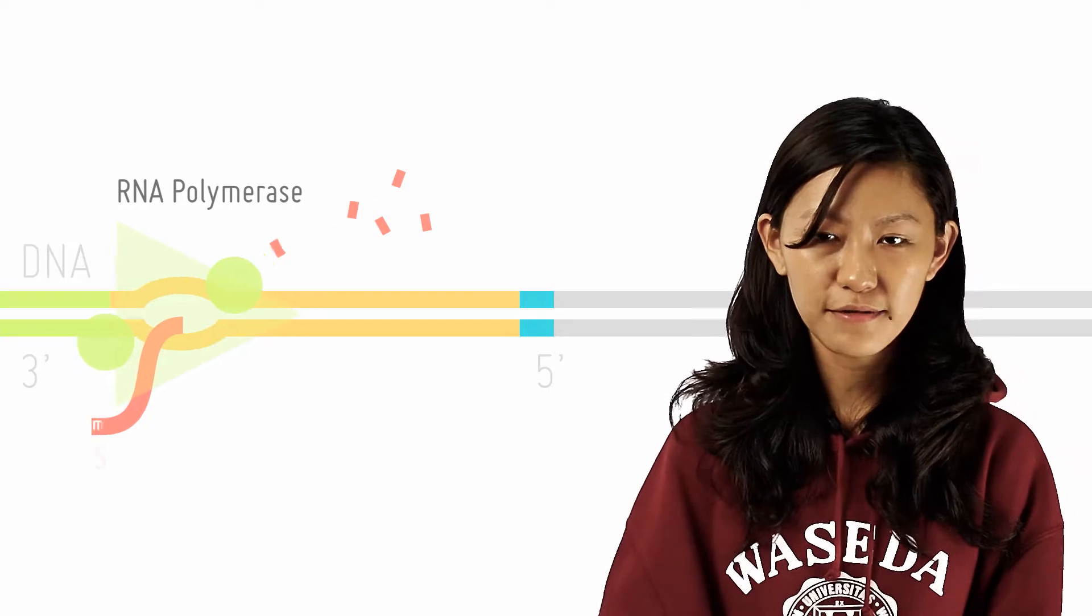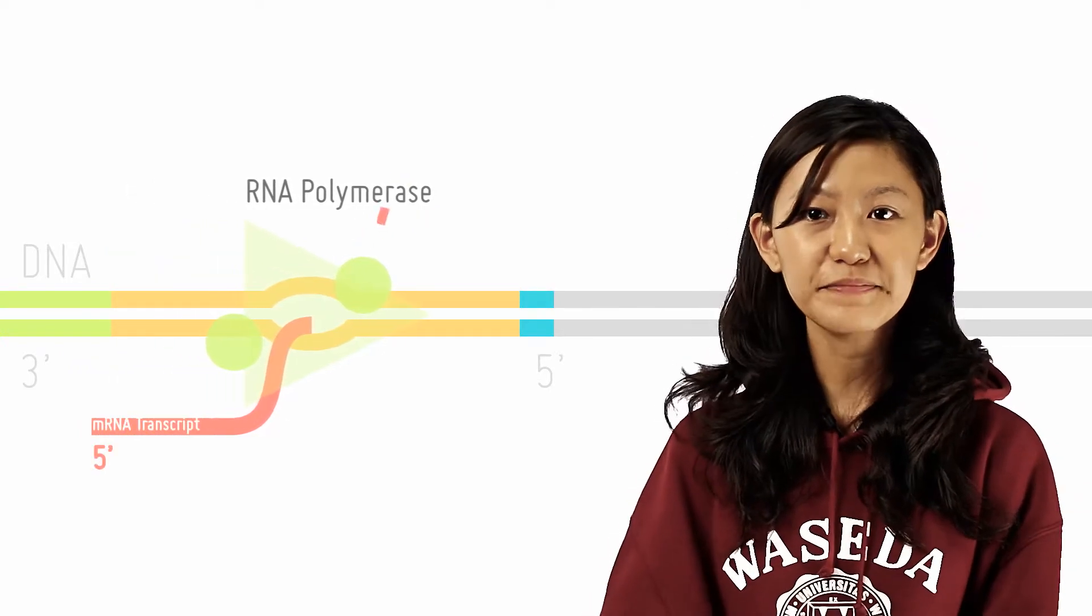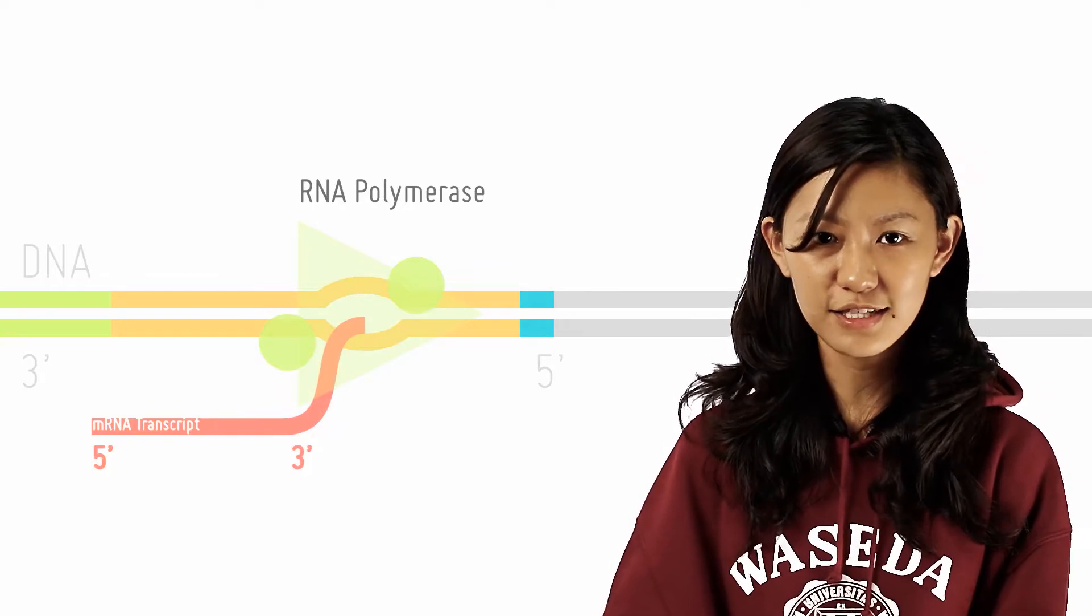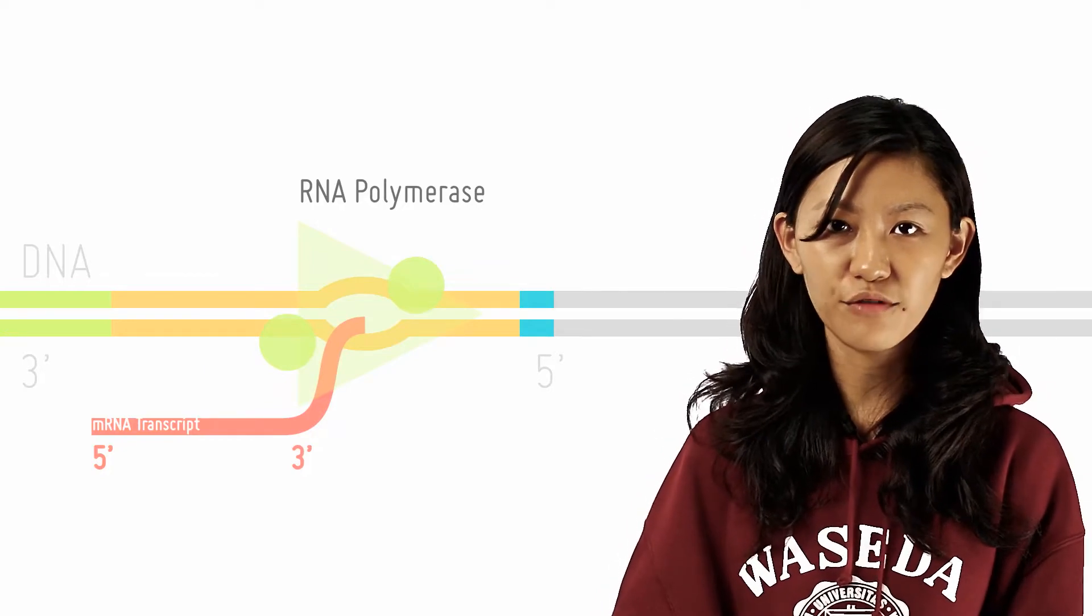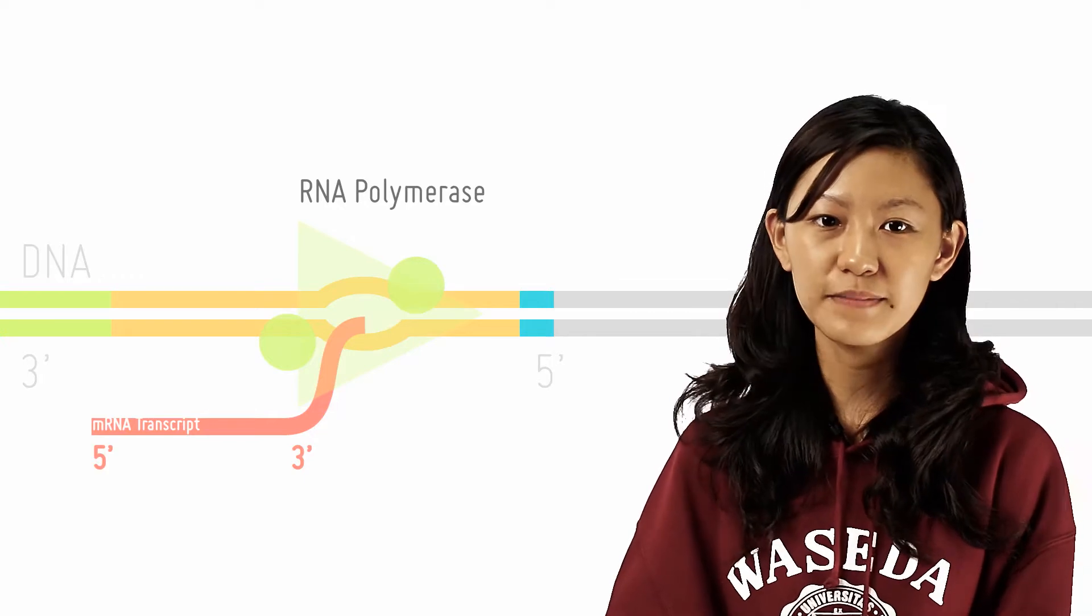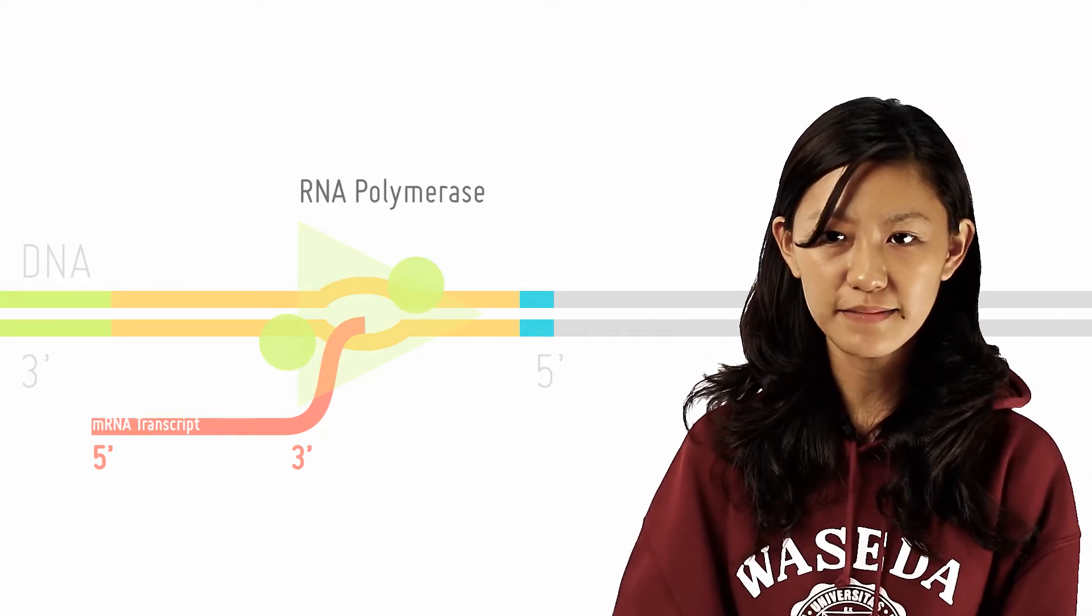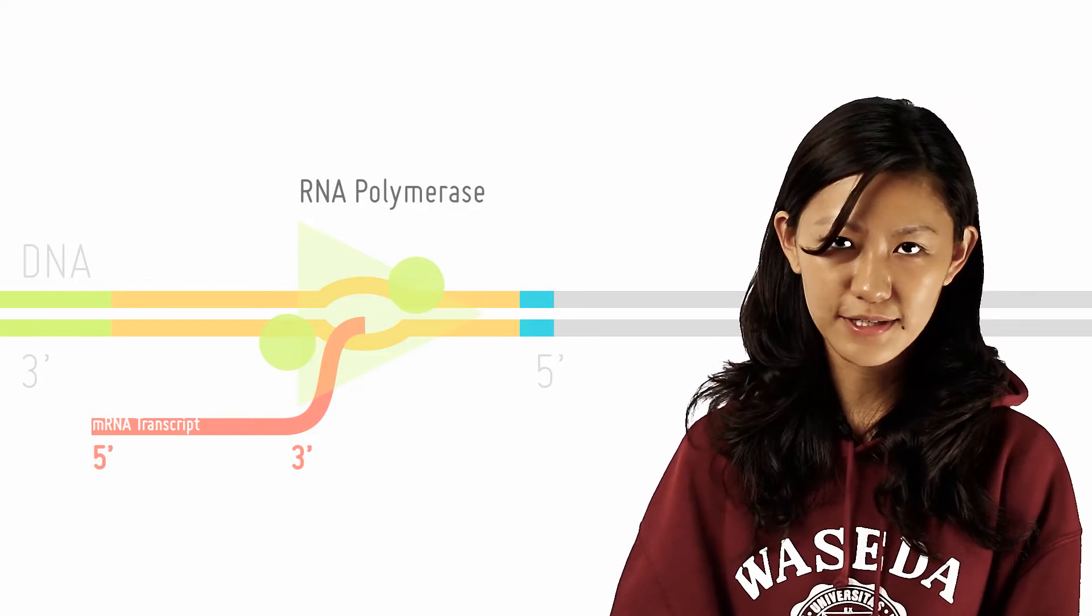As RNA polymerase moves in the 3' to 5' direction along the DNA-templated strand, it continues to separate the two DNA strands and catalyze the assembly of ribonucleotides via complementary base pairing. Parts of the DNA that has just been transcribed renews to reform a double helix.